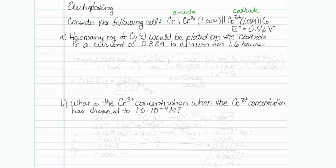First question is: how many milligrams of cobalt would be plated on the cathode if a current of 0.38 amps is drawn for 1.6 hours? We have to get from time to an amount of material. So I'm going to start with my 1.6 hours, and I'm going to note that 1 hour is 3,600 seconds. That's my first ratio.